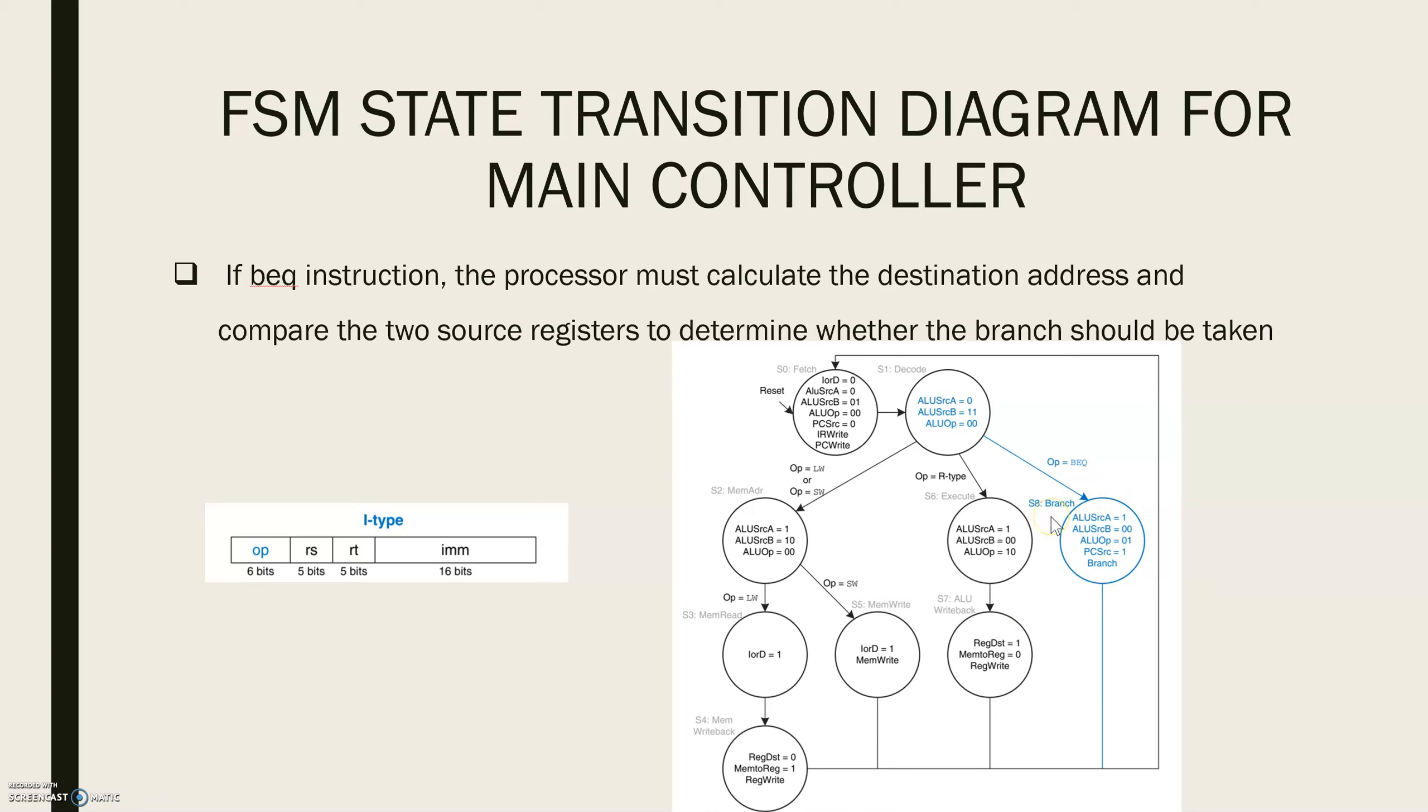In S8, the processor compares the two registers by subtracting them and checks to determine whether there is a 0. If it is, the processor branches to the address that was just computed.